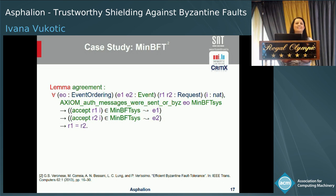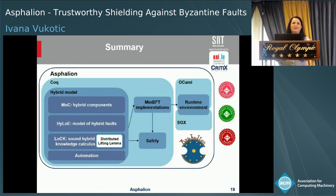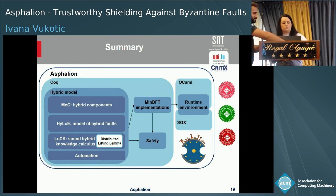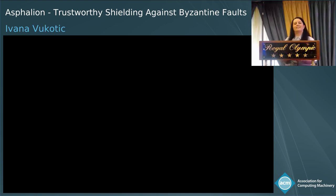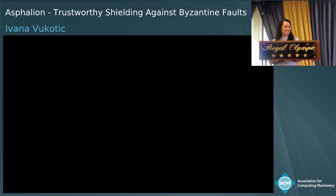Question: Could you say a few words about the effort involved in getting the Coq theorems to go through — the relative cost of proofs versus lines of code? Answer: It took around one person-year to build the framework and formally verify the MIN-BFT implementation. We have almost 30k lines of code total, and it's roughly half-and-half proof and code. You can find the exact numbers in the paper.